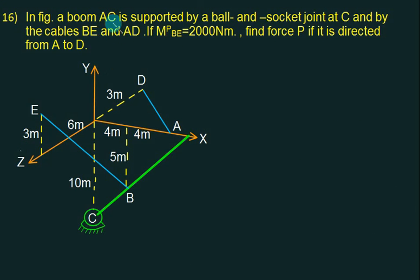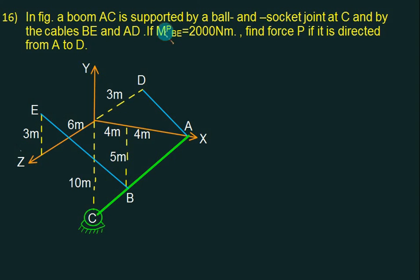In this figure, we have a boom AC supported by a ball and socket joint at C and two cables: cable BE and cable AD. The moment of force P about line BE equals 2000. We need to find the force P, which is directed from A to D.